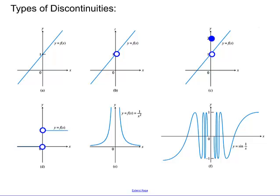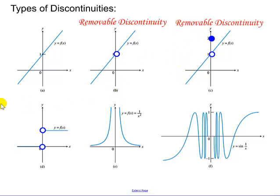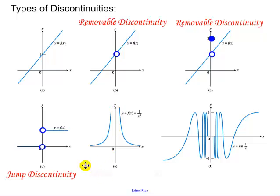There are certain types of discontinuities that I want you guys to memorize the names of. The first one, A, is continuous everywhere. Now B has what we call a removable discontinuity because I've removed this function value at 0 from our possible Y values. C is also a removable discontinuity. Now D is a step function where I have some Y values and then jump up — that's what we call a jump discontinuity. Notice in E, we have an asymptote because our function value can't be 0, so that is what we call an infinite discontinuity.